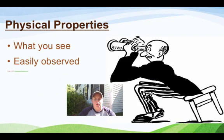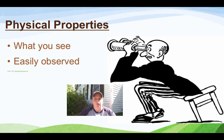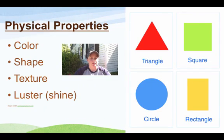Physical properties are ones that you can see with your eyeballs. When you look at something, you can see its color, its shape, its texture, and things like that. They are very easy to observe and you're not applying any fire or reacting it with other things — those would be chemical properties. So I'm going to give you a huge list, so I hope you have your pen and paper handy.